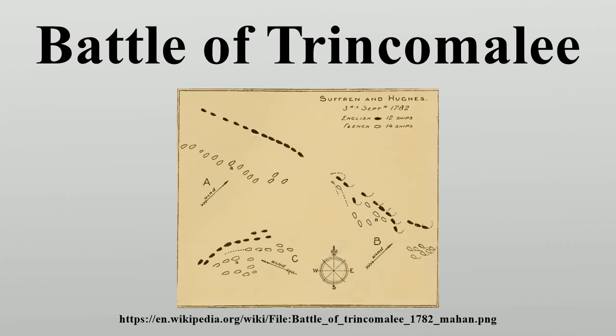The heaviest action was at the centre of the lines, where Suffren and Hughes again faced off against each other. Héros was assisted by Illustre and Ajax, while Hughes, leading from Superb, was assisted by Burford, Sultan, Eagle, Hero, and Monarca. This lopsided conflict went on for about one hour before Suffren signalled for assistance. Saint-Michel and Hannibal, commanded by insubordinate captains, stayed away, while Brillant eventually neared the action and gave some assistance.